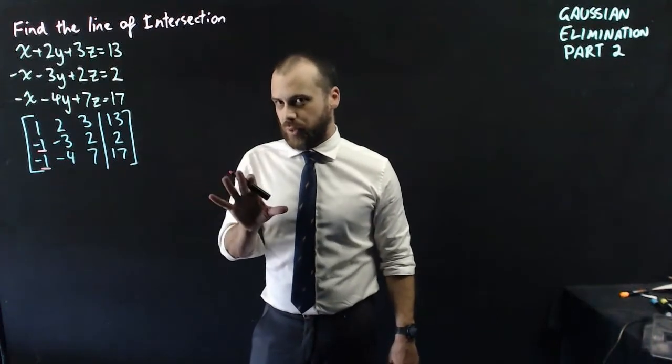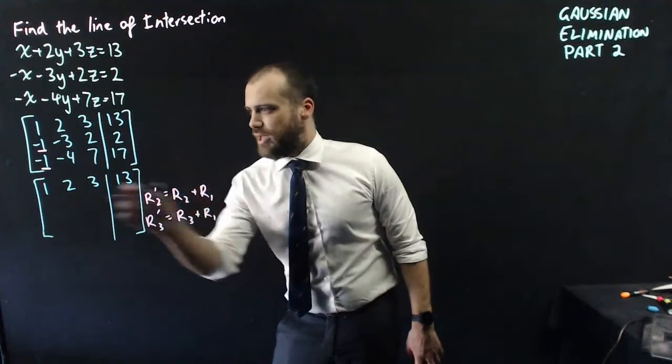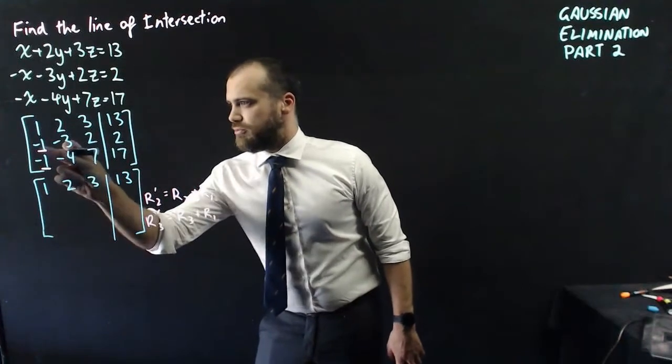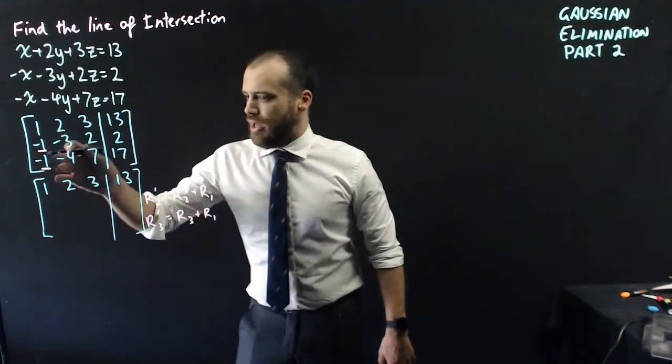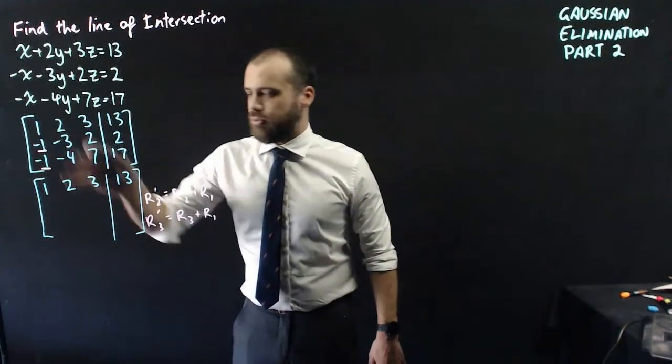So I'm going to do that in the following way. Now you should be able to see that in both instances, if I add row one to row two, I'm going to get a zero there. Negative one plus one will be zero. And I can do the same with row three. Negative one plus one will be zero.